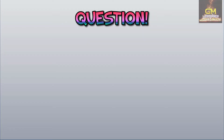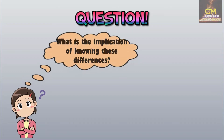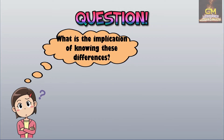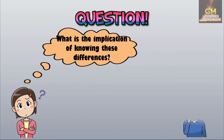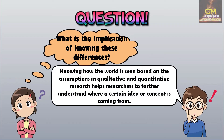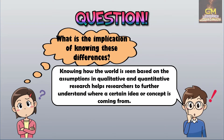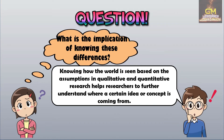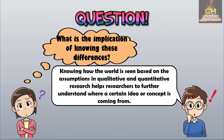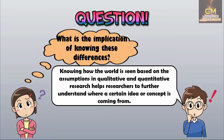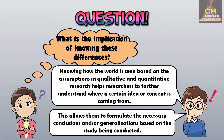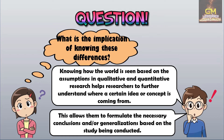Now that leads us to this particular question: what is the implication of knowing these differences? Knowing how the world is seen based on the assumptions in qualitative and quantitative research helps researchers to further understand where a certain idea or concept is coming from. As such, this allows them to formulate the necessary conclusions and/or generalizations based on the study being conducted.